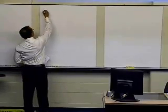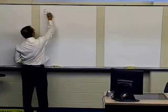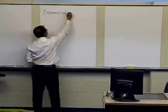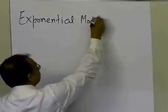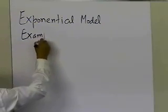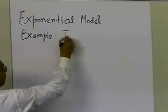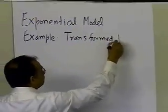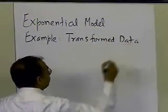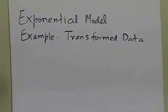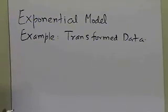In this segment, we're going to take an example of the exponential model of regression. We have an exponential model which we want to use for regressing to a particular dataset, and we're going to use transformed data to do so. In the previous segment, I already talked about the theory of using transformed data to develop the exponential model.